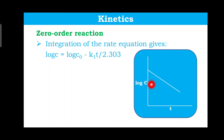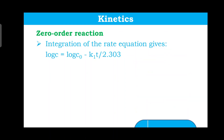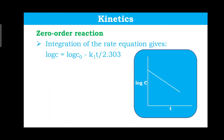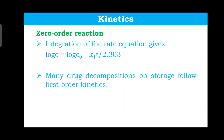For zero order, C versus t gives a straight line, but here in first order, C versus t will not be a straight line — instead it will be an exponential fall. But log C versus t, if you get a straight line, that means it is a first order process.